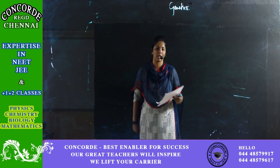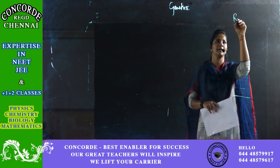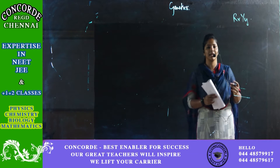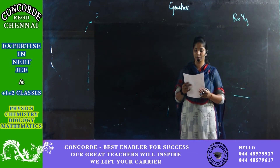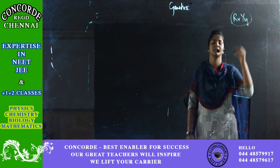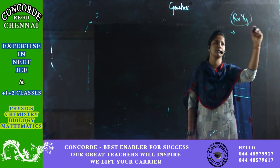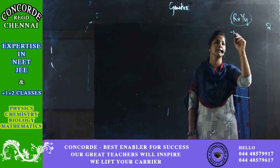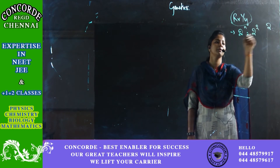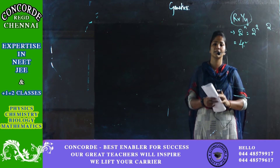I will read out the question and then explain the answer. The first question: capital R, small r, capital Y, small y — from this parental type, how many gametes can it yield? The options are 4, 5, 2, 6. To calculate the number of gametes, I count the number of heterozygotes. Here both R and Y loci are heterozygous, so n equals 2. The formula is 2 to the power n, so 2 squared equals 4. The answer is 4 gametes.